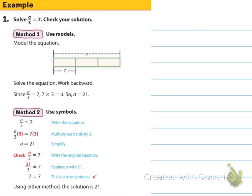For number one, it says solve A divided by 3 equals 7. Check your solution. Using the models in method one, it's showing that we have A as our total thing. We're dividing it into three equal parts, and we know that each part is going to be 7. So if you want to figure out what A is going to be, we would take 7 times 3, which is 21.